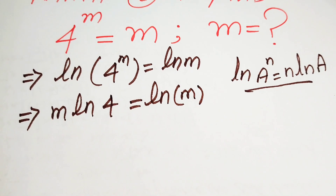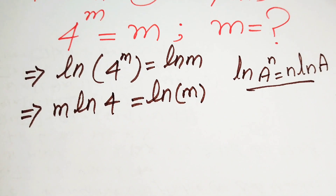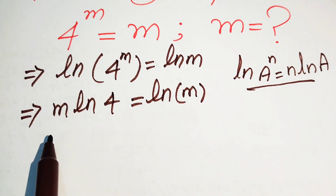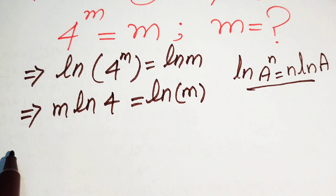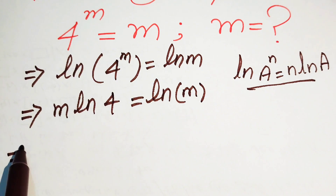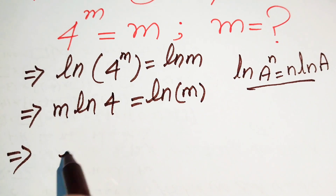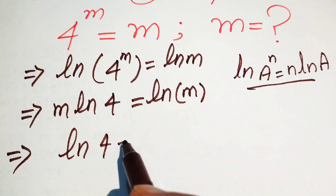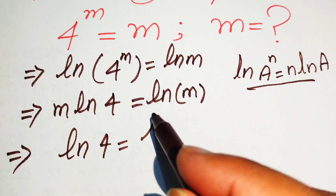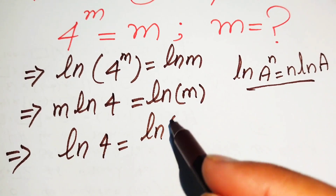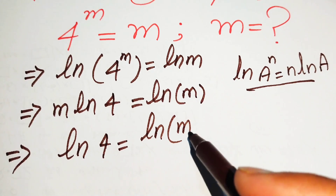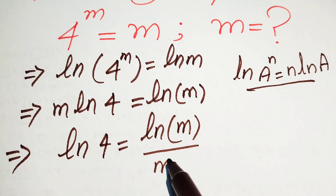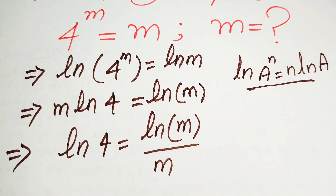Now in the next step we move m to the right hand side, and it will be written as log 4 equals log of m divided by m.